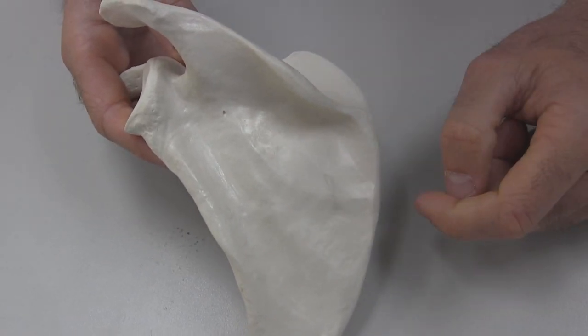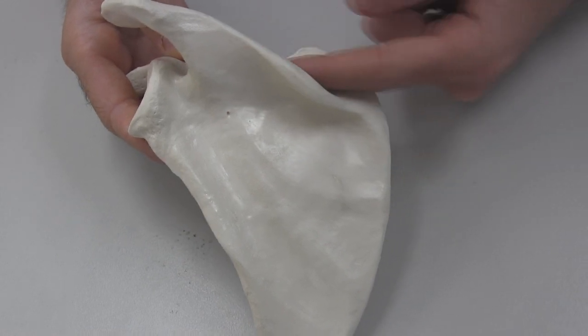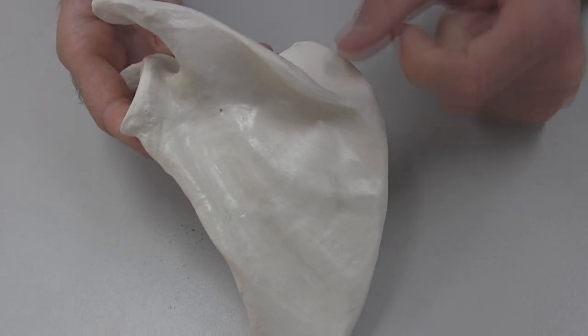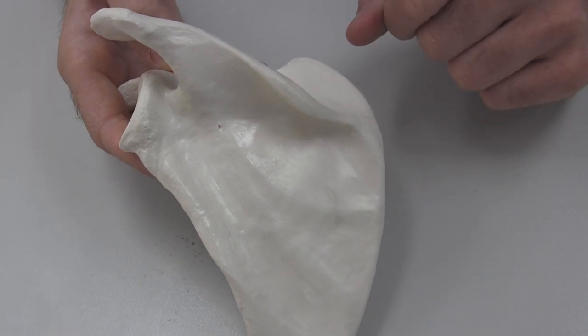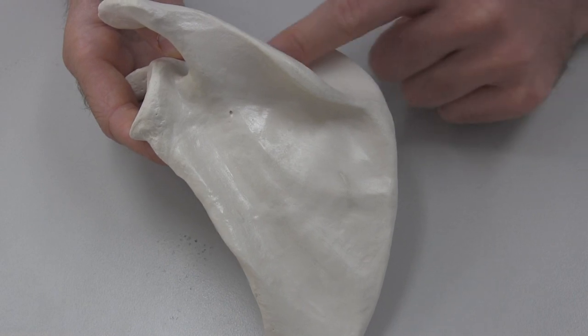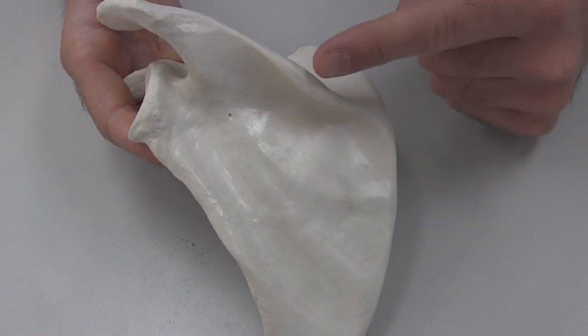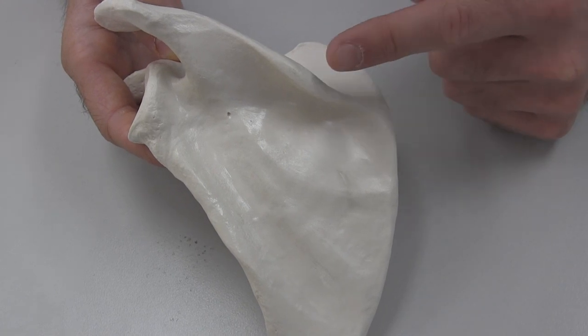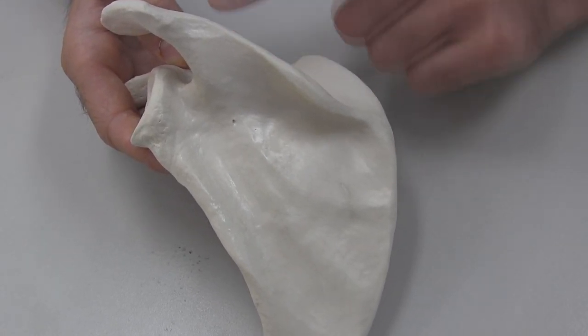We've got three fossas on the scapula. Above the spine of the scapula, we've got a fossa called the supraspinatus fossa. Let's break down that word supraspinatus. Supra comes from the word superior, so above the spine, and spinatus coming from the word spine. So supraspinatus means above the spine.